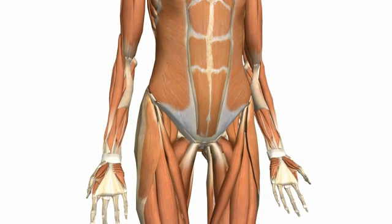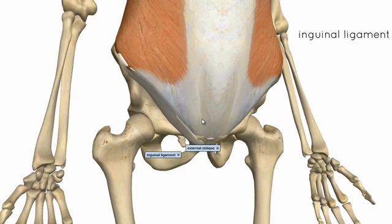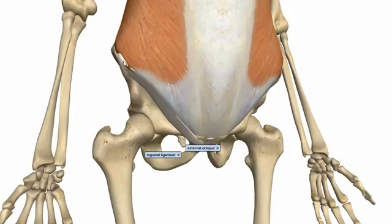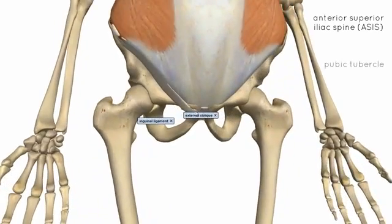One important thing about the external oblique: the inferior margin of its aponeurosis actually forms the inguinal ligament. This can be seen running from the anterior superior iliac spine down to the pubic tubercle.